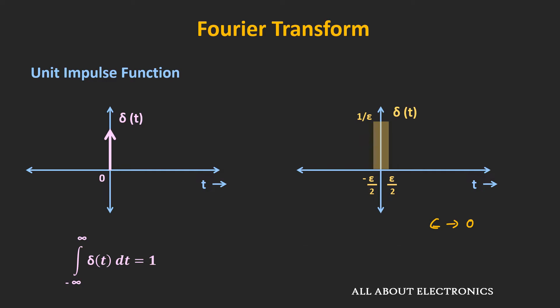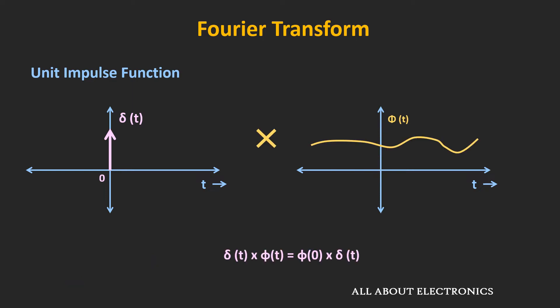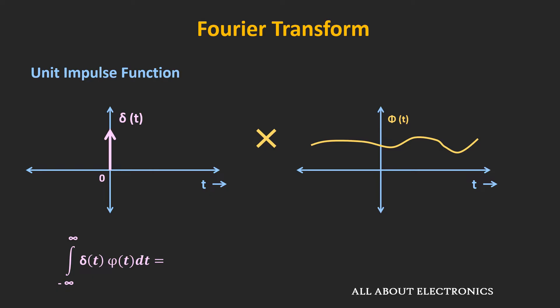Now let's see what happens when we multiply this unit impulse function with some other function. Let's say there is some function φ which is continuous at time t is equal to zero. Now since the impulse function only exists at time t is equal to zero, so when we multiply it with another function φ, then we get φ(0), that is the value of the function φ at time t is equal to zero. That means the multiplication of the unit impulse function with this function φ is equal to φ(0) times δ(t). Similarly, when we multiply this time-shifted impulse function δ(t-T) with φ, then we get φ(T). And this unit impulse function is very useful because of its sampling property. So when we multiply this impulse function with another function φ and integrate it from minus infinity to plus infinity, then it gives the value of the function at time t is equal to zero.